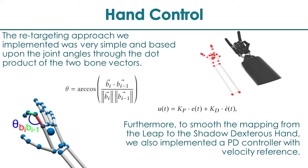By using the dot product of the two bone vectors, we were able to extract the joint angles for each individual joint. Thus, we took that from the LeapMotion hand controller and transferred that to the Shadow Dexterous hand shown on the upper right.